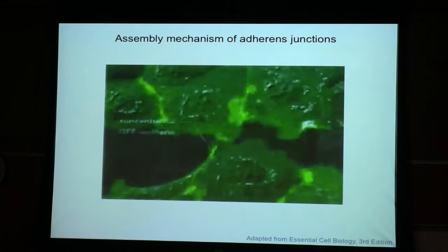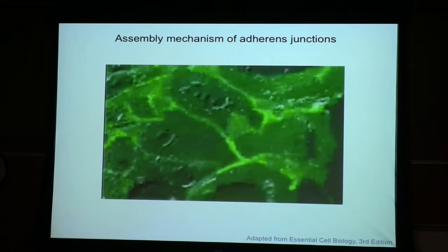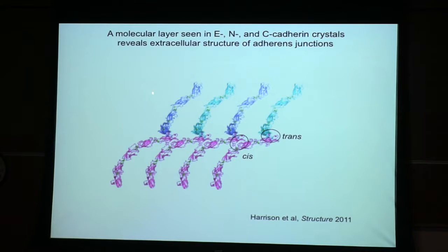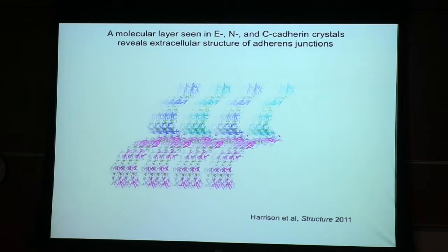In the case of classical cadherins, these interfacial regions eventually form fixed junctions called adherens junctions. When we solved the structures of E, N, and C-cadherin, we found that they all formed a very distinct crystalline-looking lattice. This is the trans interaction — trans means interactions of proteins in different cells; cis are interactions of proteins in the same cell. So this is the strand-swap interaction I already showed you, but in addition there's a second cis interaction. You can see the two-dimensional lattice in a crystal.